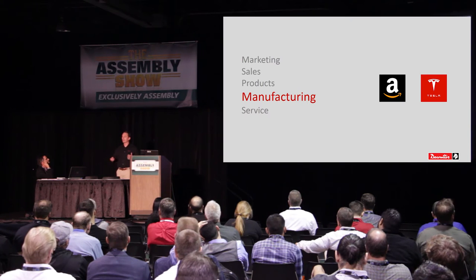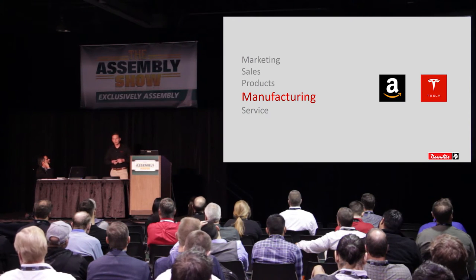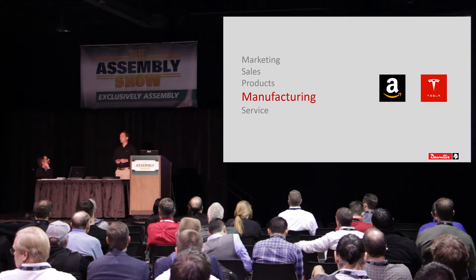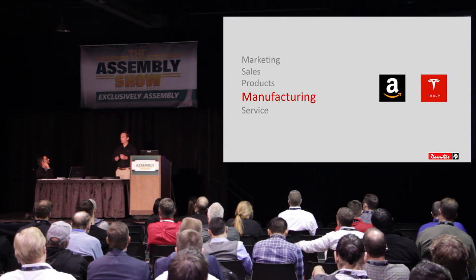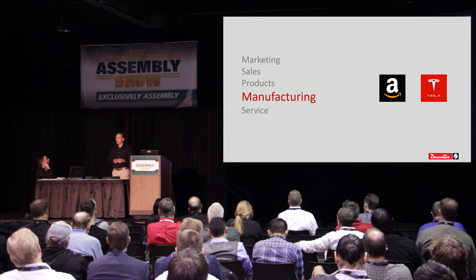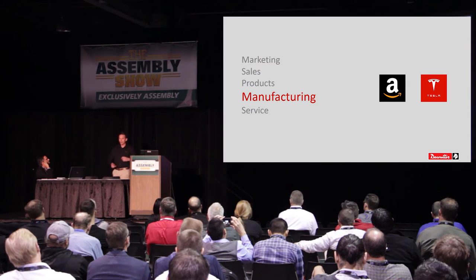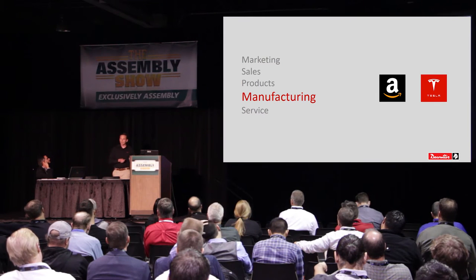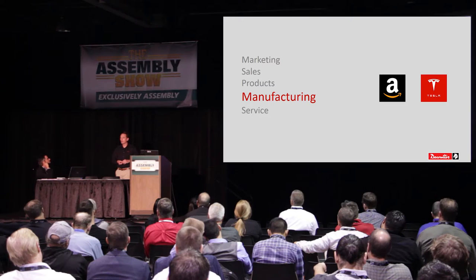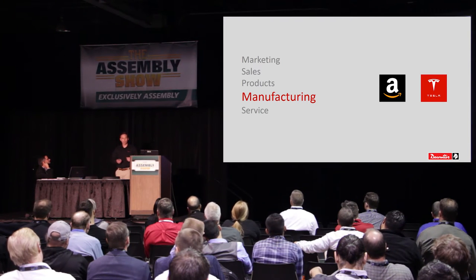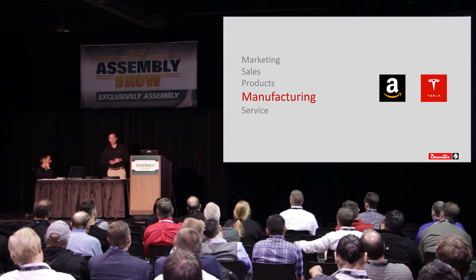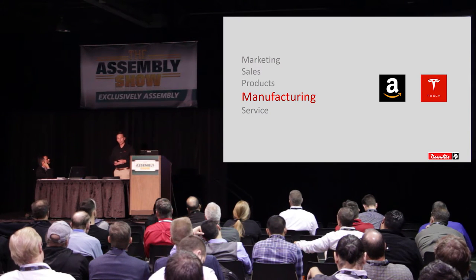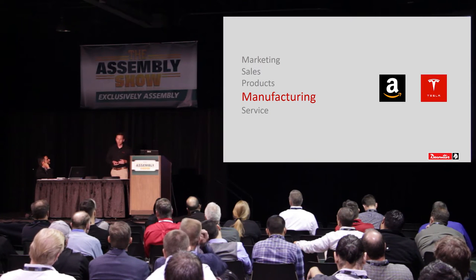Amazon also uses big data on a macro scale. Instead of just creating a unique marketing plan for you, they take all the other people that were looking at TVs and see what they ultimately purchased. So Amazon can start advertising complementary goods to you that related shoppers purchased in the end. We can analyze trends on a very micro level, but it can also be applied at the macro level. With Amazon, they're using big data and hoping to see an immediate payback — within a month, within a week — using it for marketing and sales.